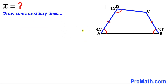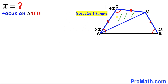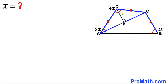Let's get started. Our very first step is to connect points A and C. As a result, we end up with triangle ADC. We can see that this is an isosceles triangle since AD equals CD. We then drop a perpendicular DE onto line AC.